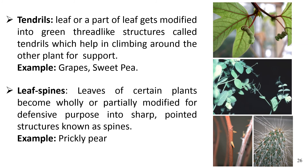Tendrils are a modified form of leaf. In this case, a leaf or part of a leaf gets modified into a green thread-like structure called a tendril, which helps in climbing around other plants for support. Examples include grapes and sweet peas. Another modified form is the leaf spine, where a leaf becomes wholly or partially modified into a sharp-pointed defensive structure. In prickly pear, the minute leaves of the axillary bud are modified into spines.